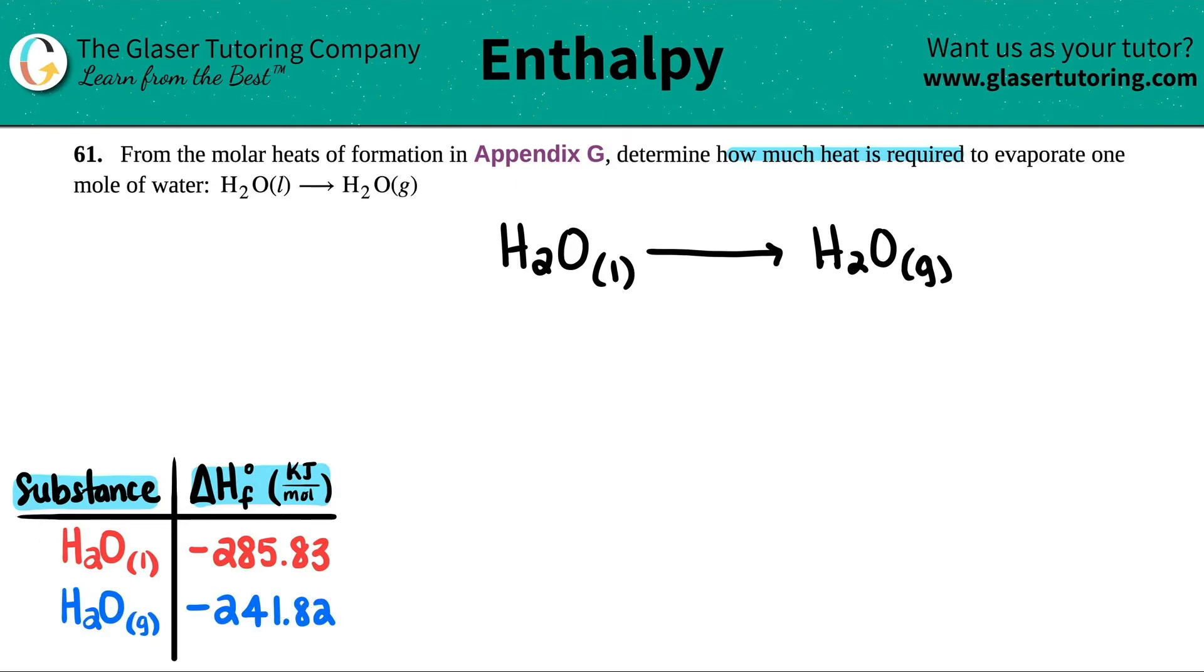Now you might see that there's going to be three different columns: one for delta H, one for delta G, and then one for an S value.